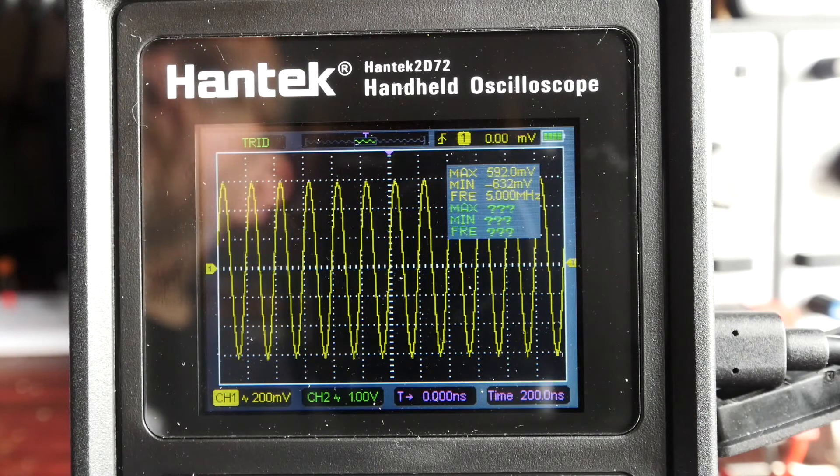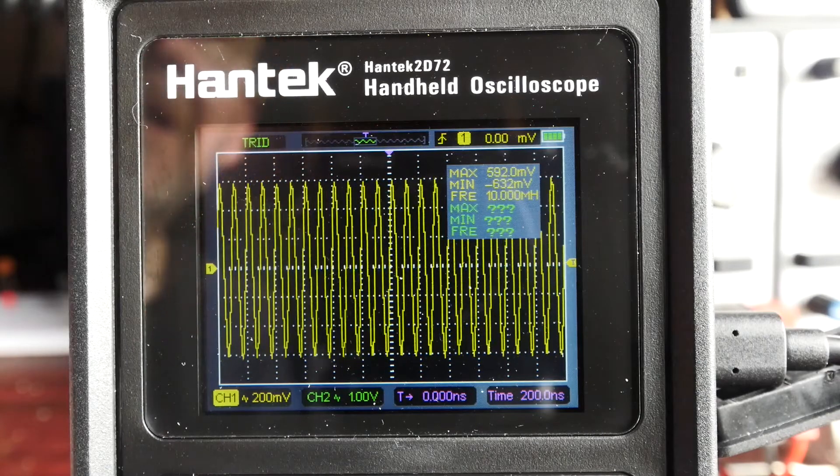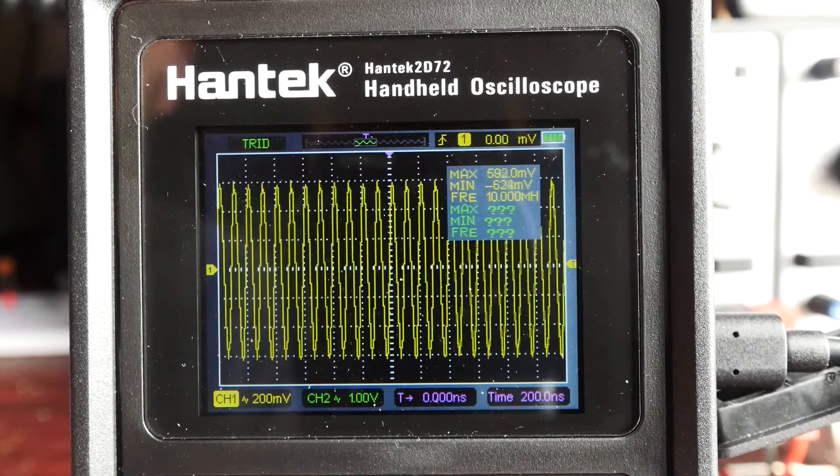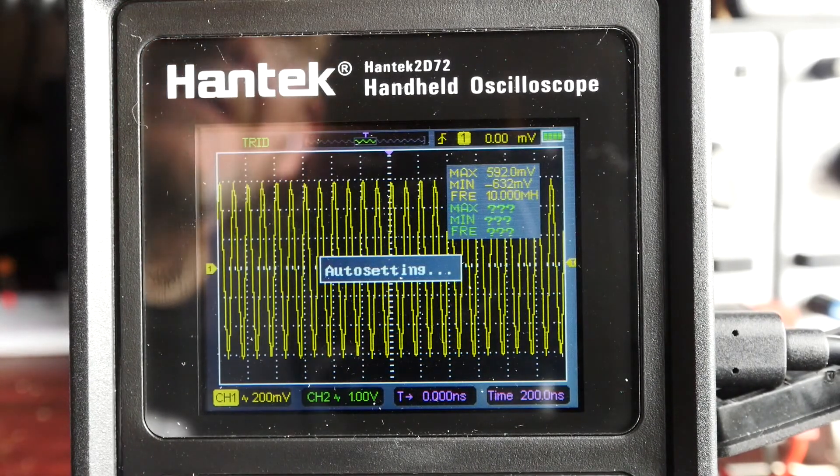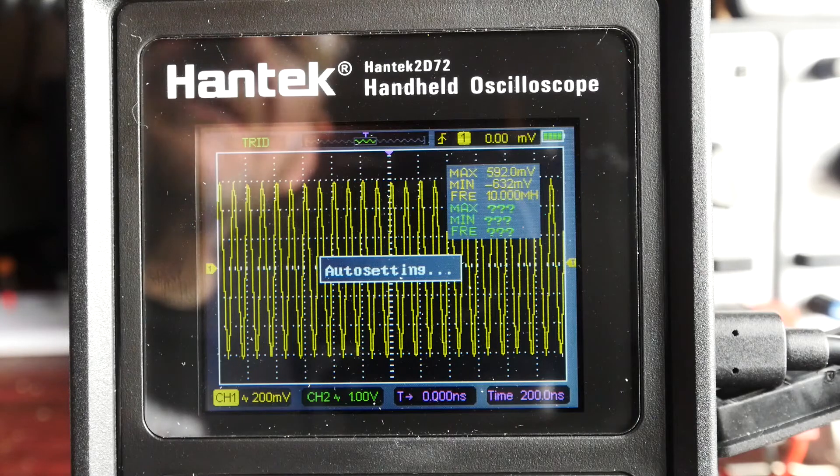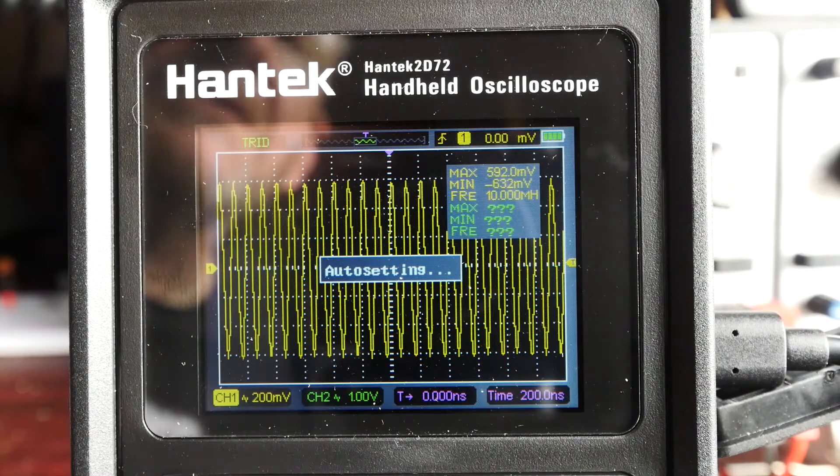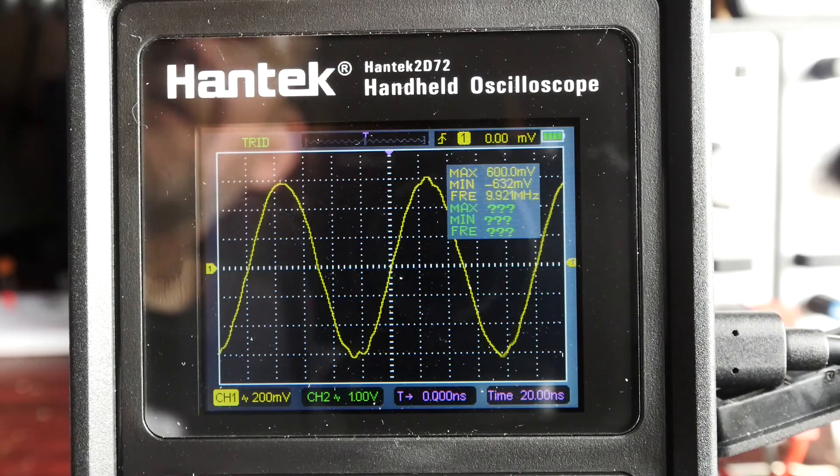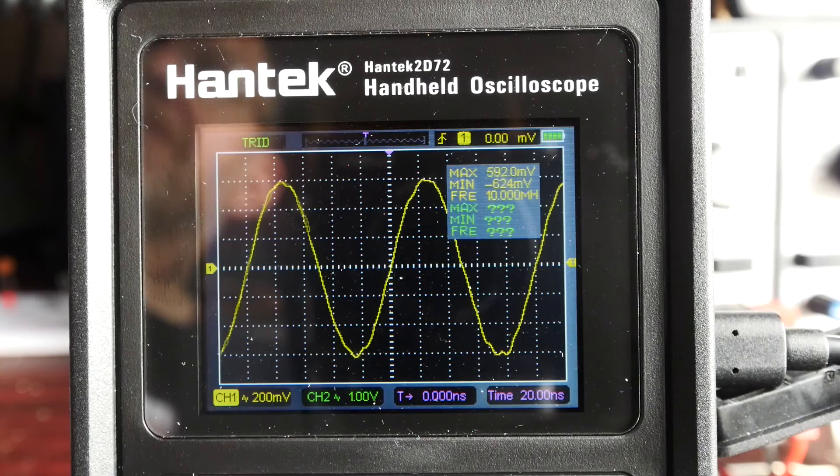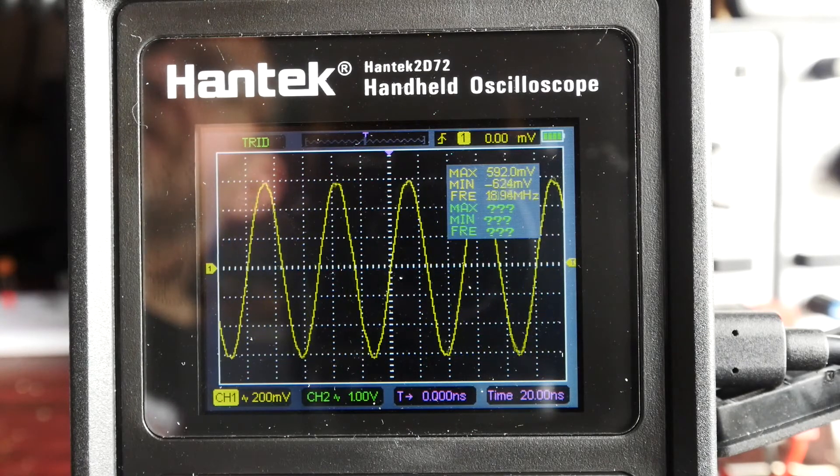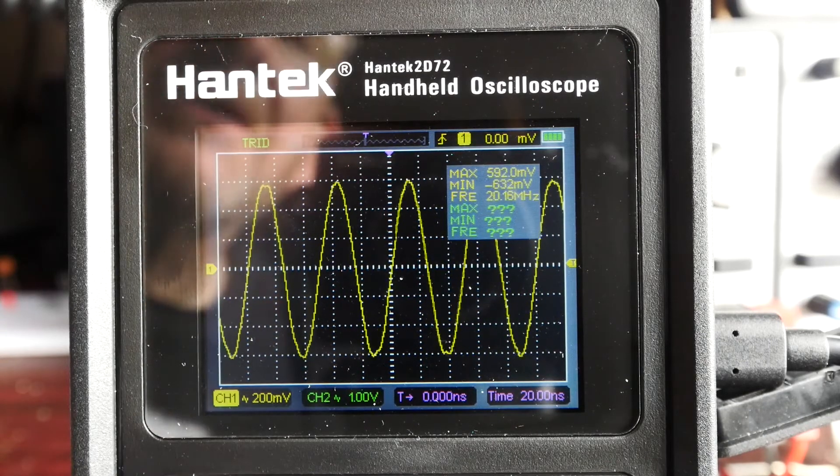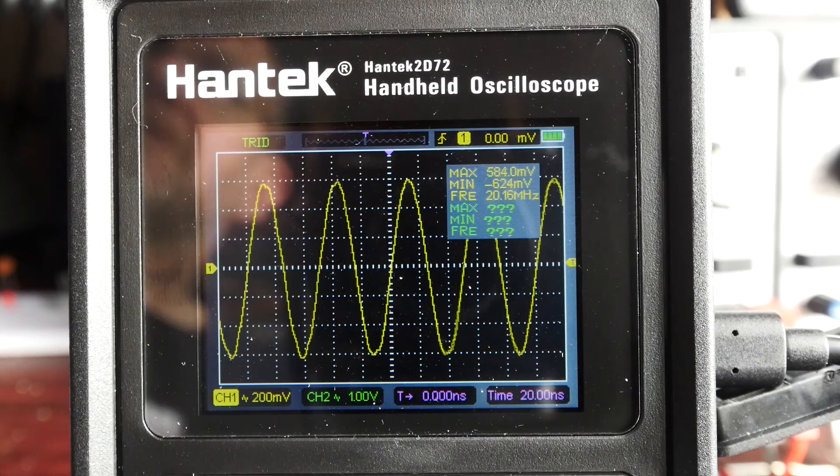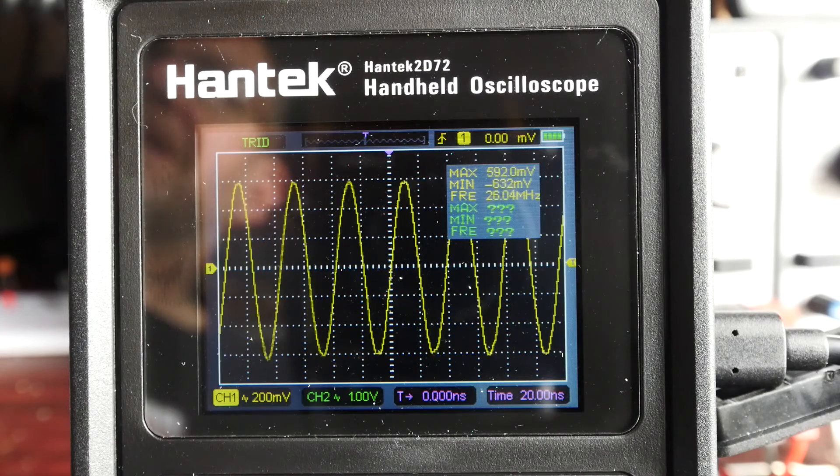So we're now up to 10 megahertz, and I'm just going to get the scope to auto set. It's displaying a reasonably shaped wave, showing 10 megahertz, and we're still at about three divisions. We're up at 20 megahertz, still showing a reasonable sine wave and agreeing from a frequency measurement point of view. I'm going to carry on to 30 megahertz.